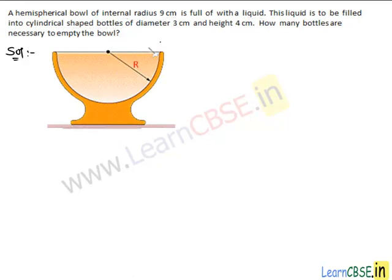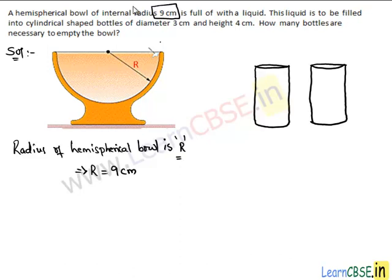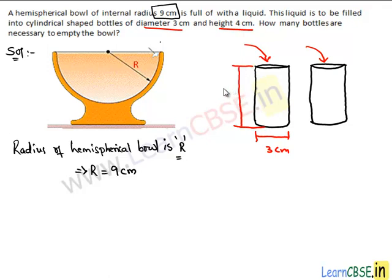This is a hemispherical ball and internal radius r is 9 cm. The water in this ball is used to fill up cylindrical-shaped bottles. The given dimensions are: diameter of the base circle is 3 cm and the height of the cylinder, that is the height of each bottle, is 4 cm. Using this, we have to find the number of bottles required to empty the hemispherical ball.